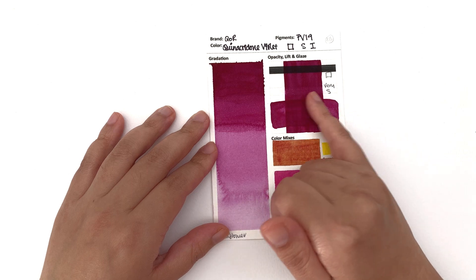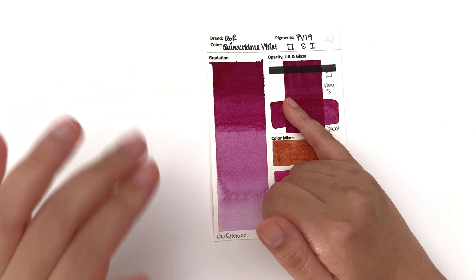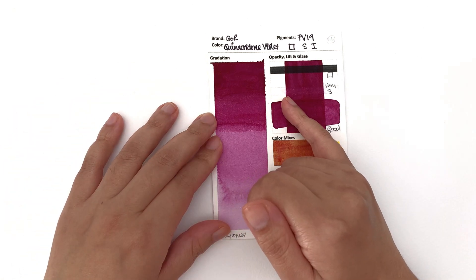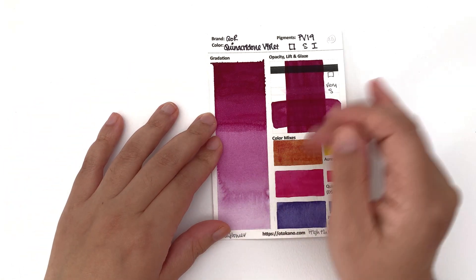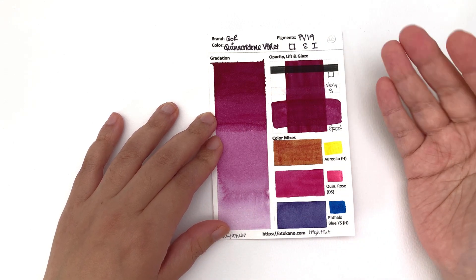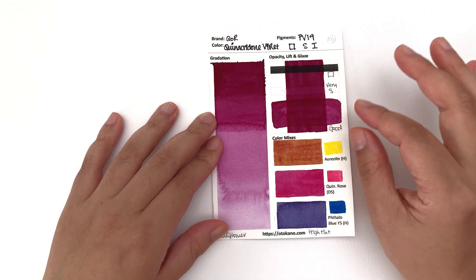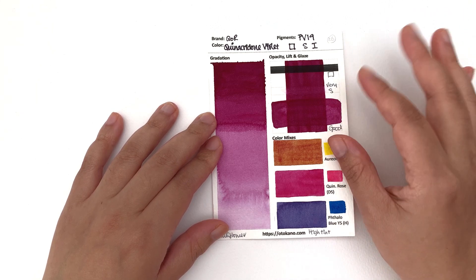It almost looks like I haven't tried. I have. As always with the lifting test I get a clean brush, wipe it three times, dab it and repeat that twice more so it's quite a thorough lifting and it's barely lifted. I think this is one of the most staining colors in the core range.